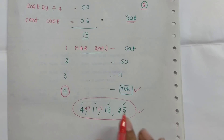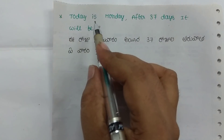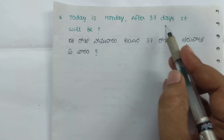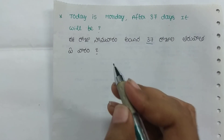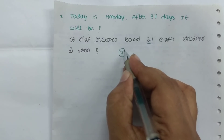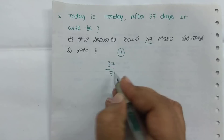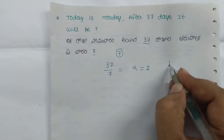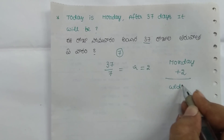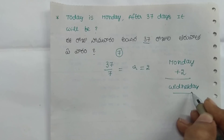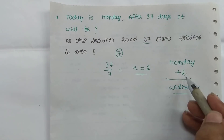Today is Monday. After 37 days, what day will it be? We have to find the remainder. If we divide 37 by 7, we get a remainder of 2. So 2 days after Monday it will be Wednesday. This is very simple — just find the remainder when dividing by 7. The remainder gives you the number of days to add.